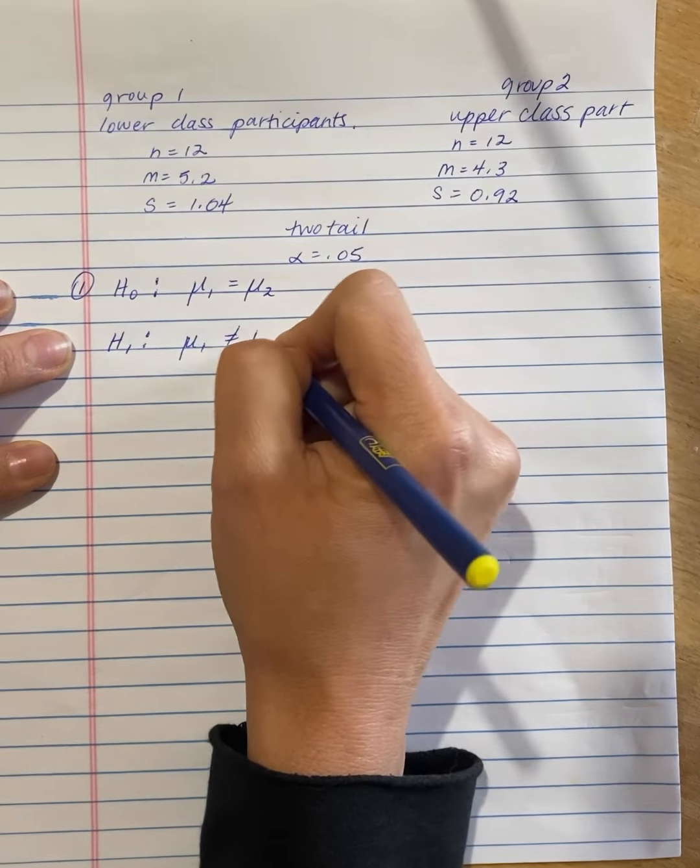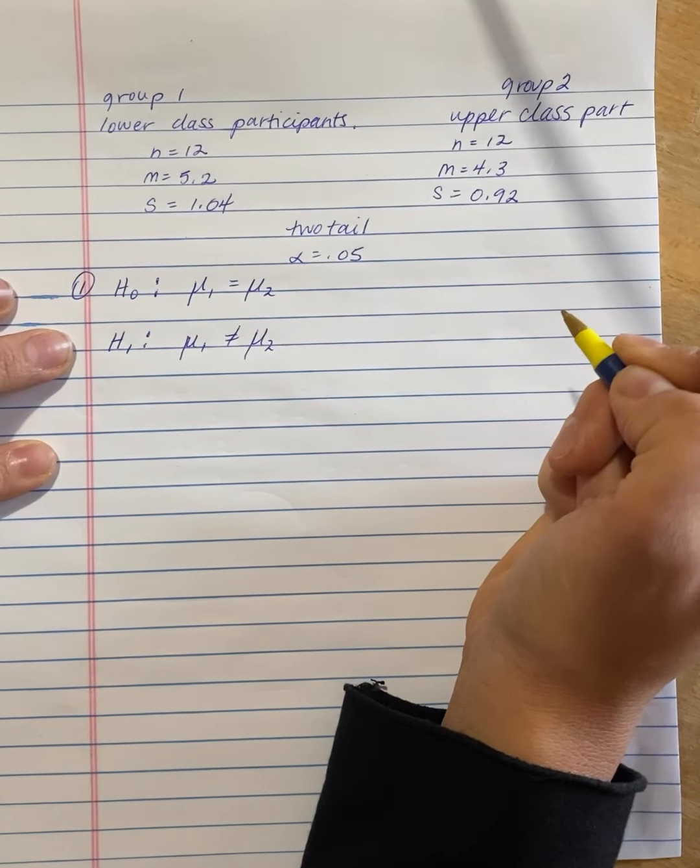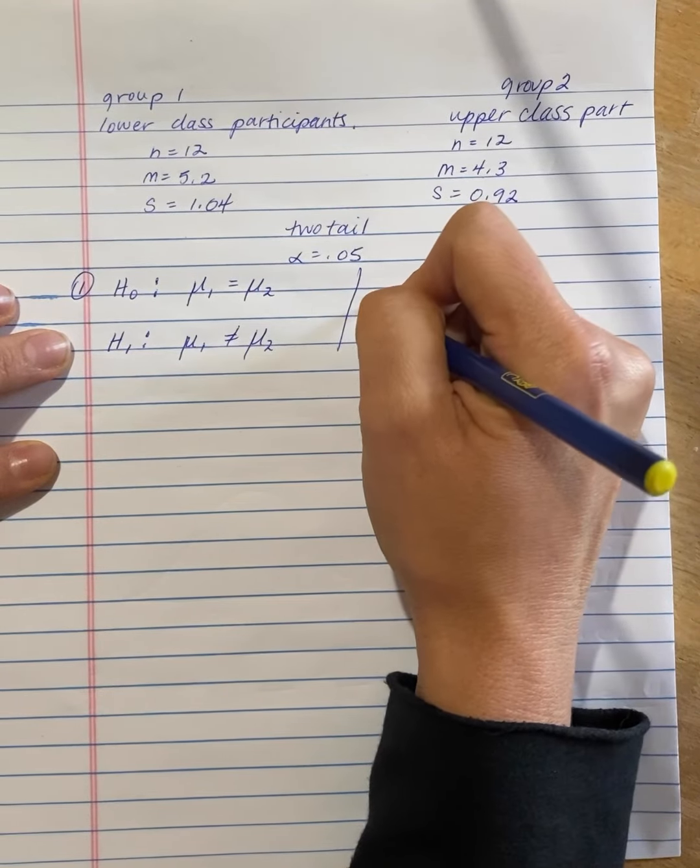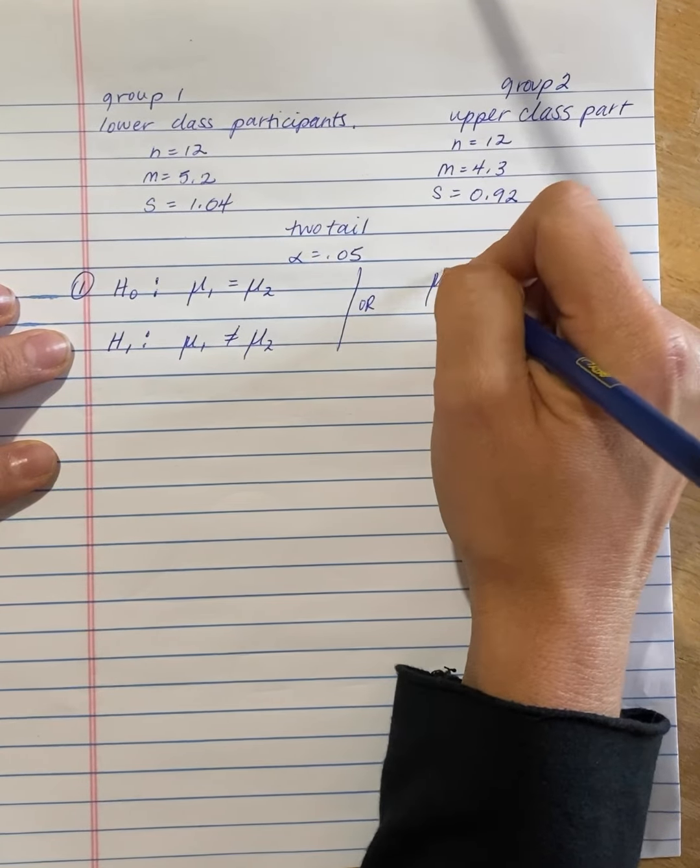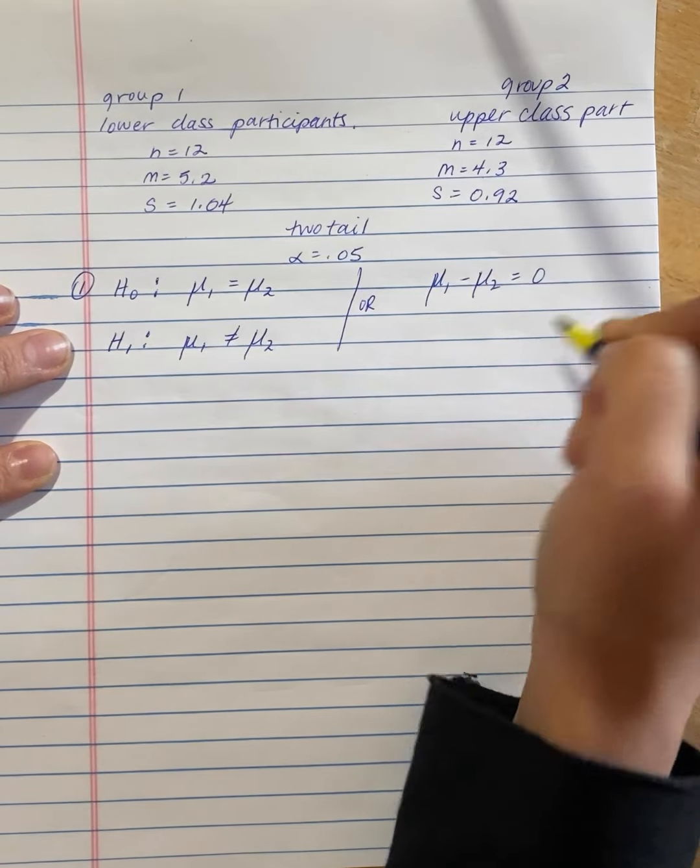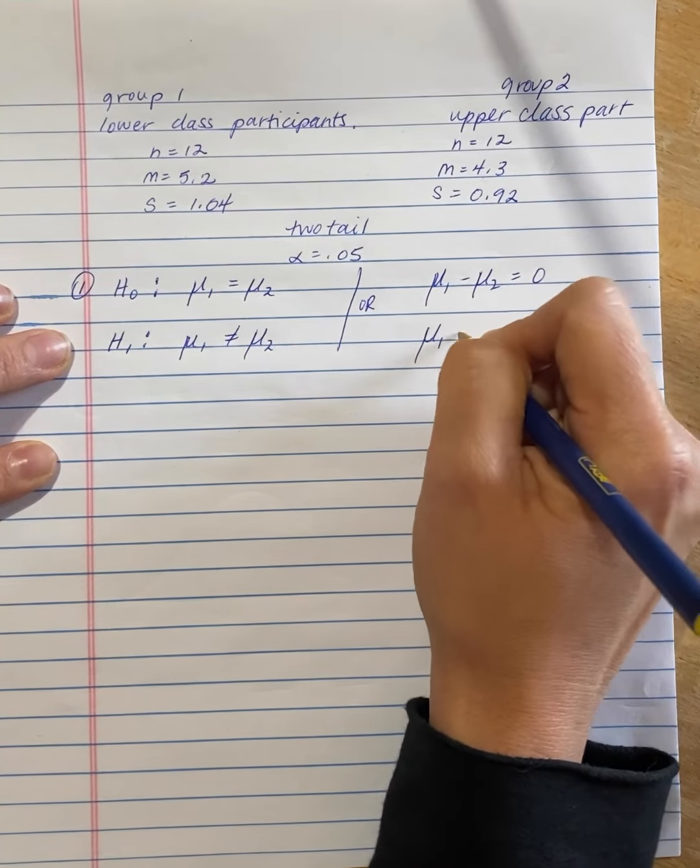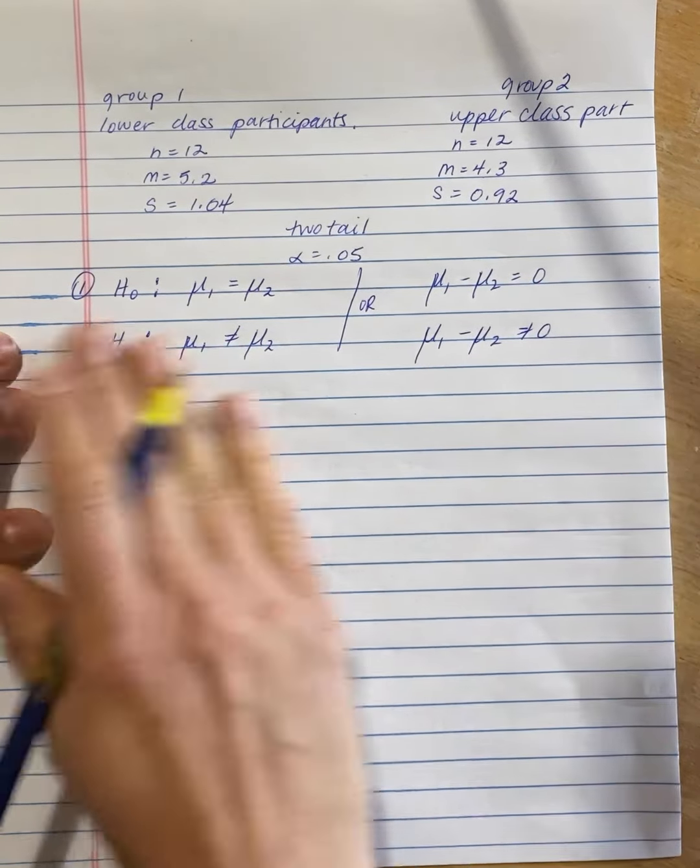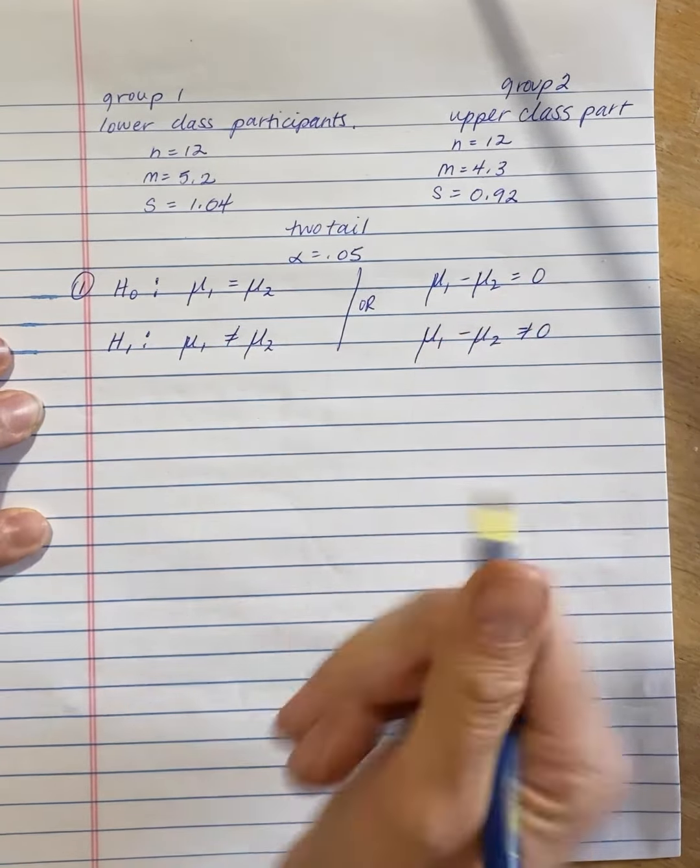The alternative is that they are not the same. And we can rewrite these. You don't need both of them. But we can also write it as mu1 minus mu2 equals 0, and mu1 minus mu2 does not equal 0. So that's step one. We stated our hypotheses.